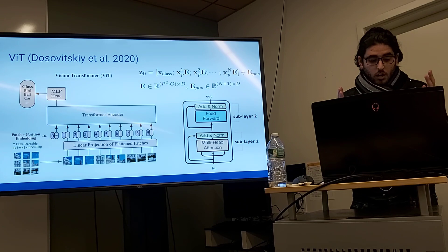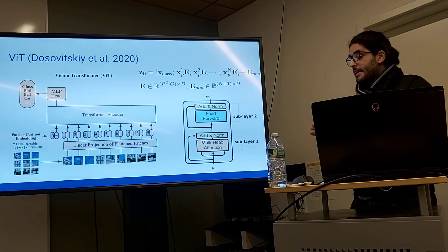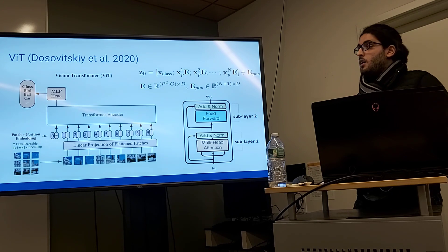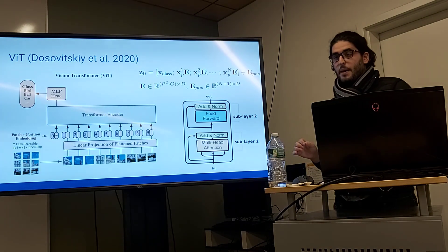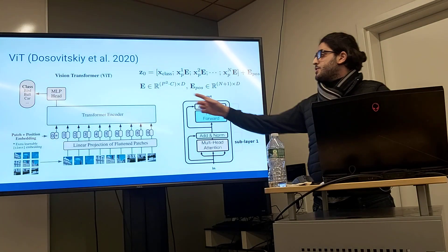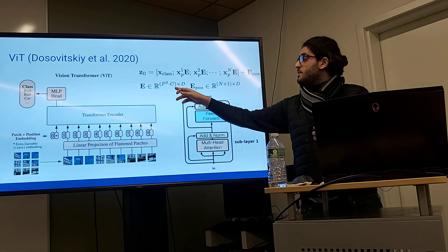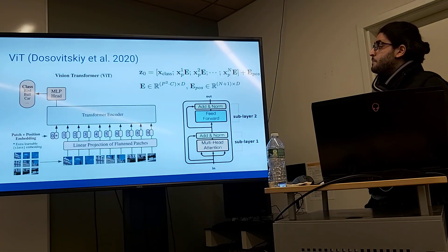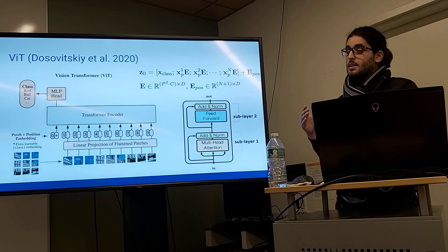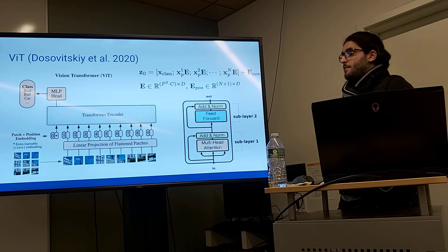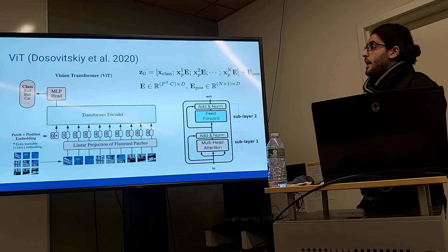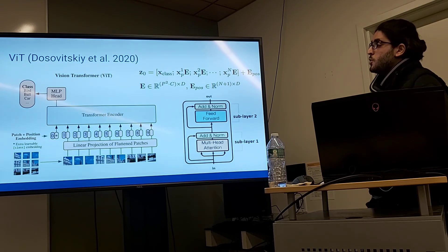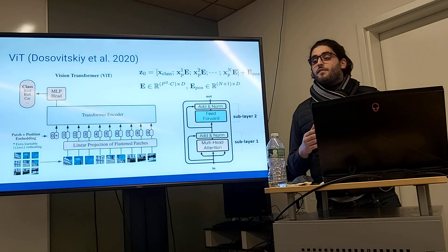We want to map each patch to a constant latent vector. We do this through a trainable projection by multiplying each flattened patch vector by the embedding matrix E, which has dimension 300 by D. D is set privately — for example, in the original paper, the Base model has a 768-dimensional latent vector, the Large Vision Transformer uses 1024, and the Huge Vision Transformer has a latent vector dimension of 1280.